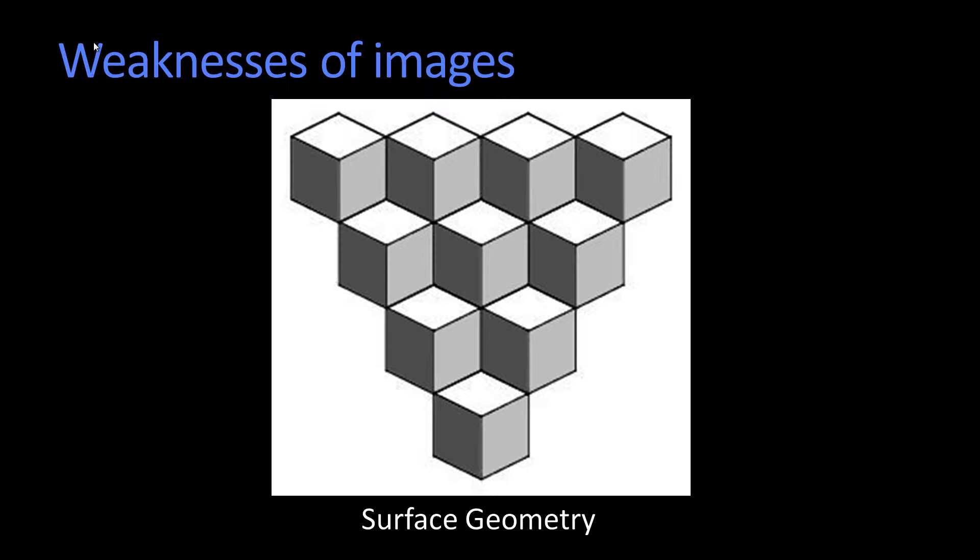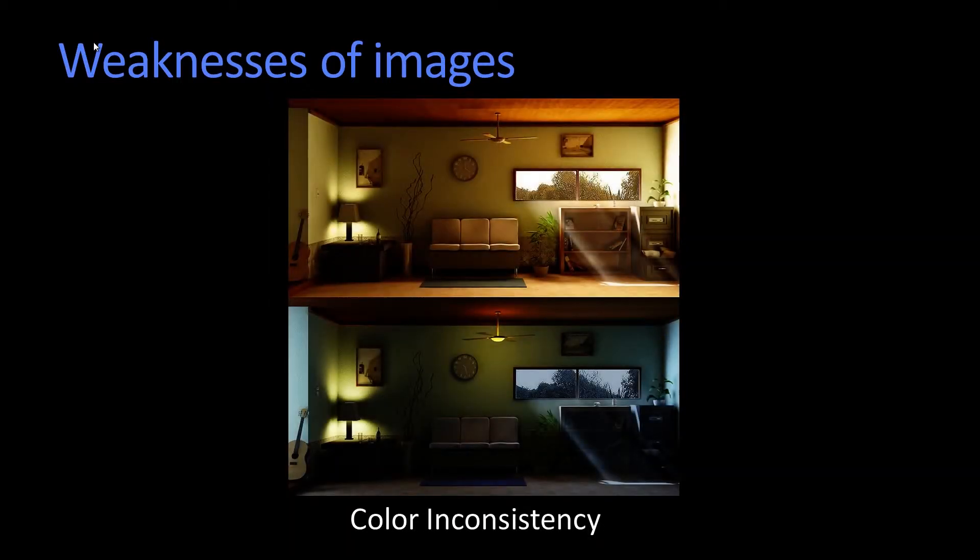There's a question of how do you get a single image to understand this kind of stuff? You have all these problems that intensity, image intensity changes as a function of the illumination. Here's an image of the same scene lit from different colored light. It provides a different image to be processed, and yet the geometry is identical.